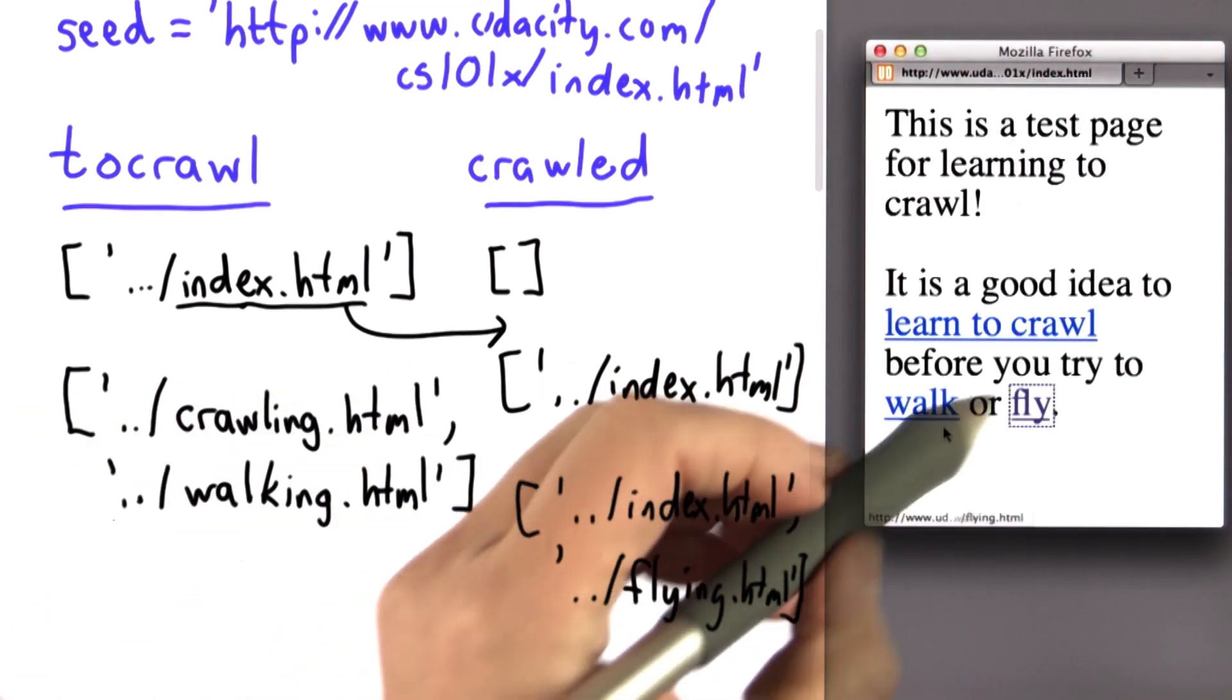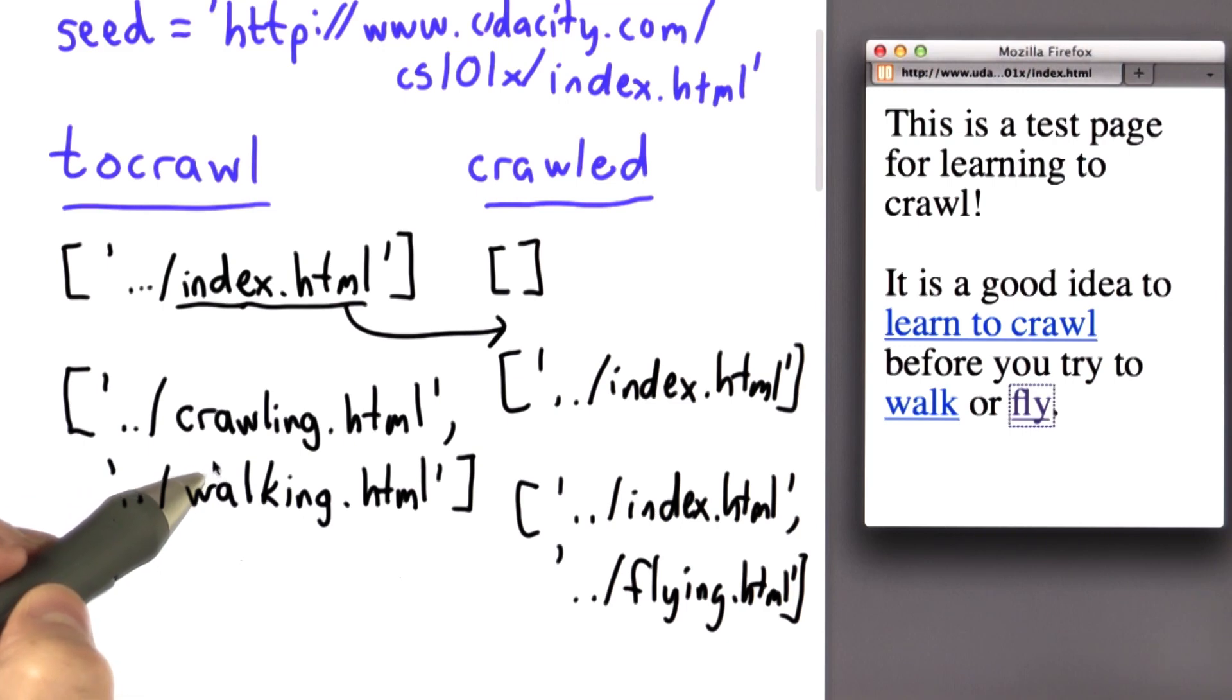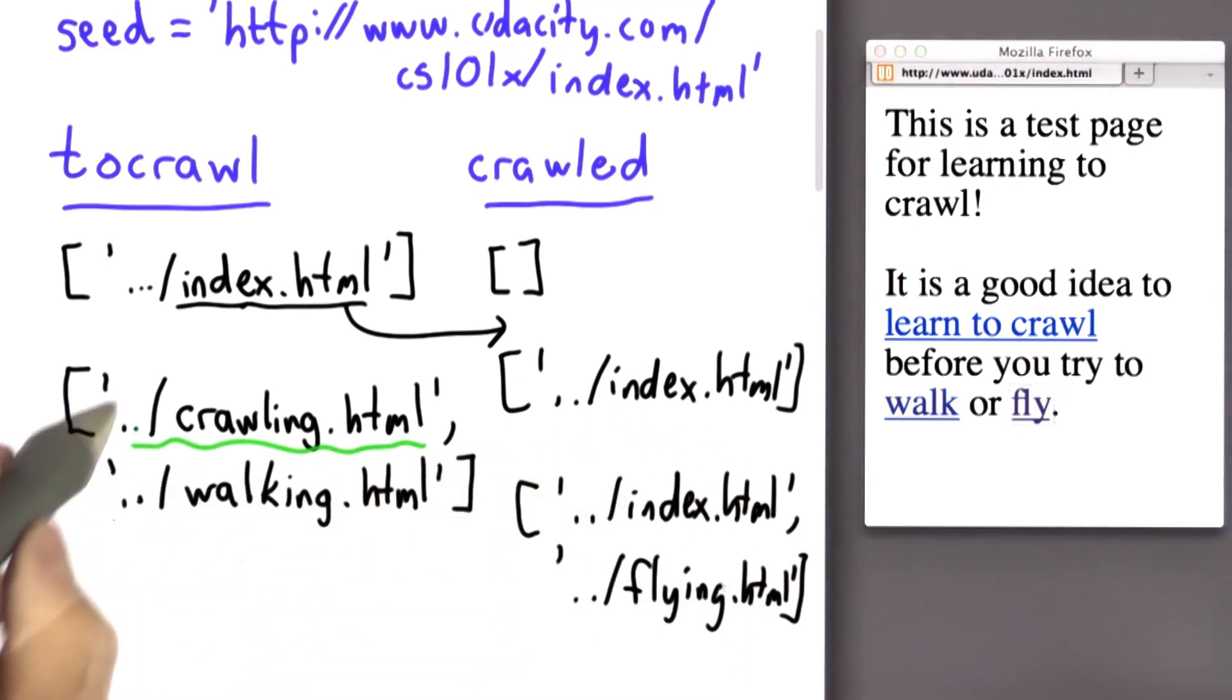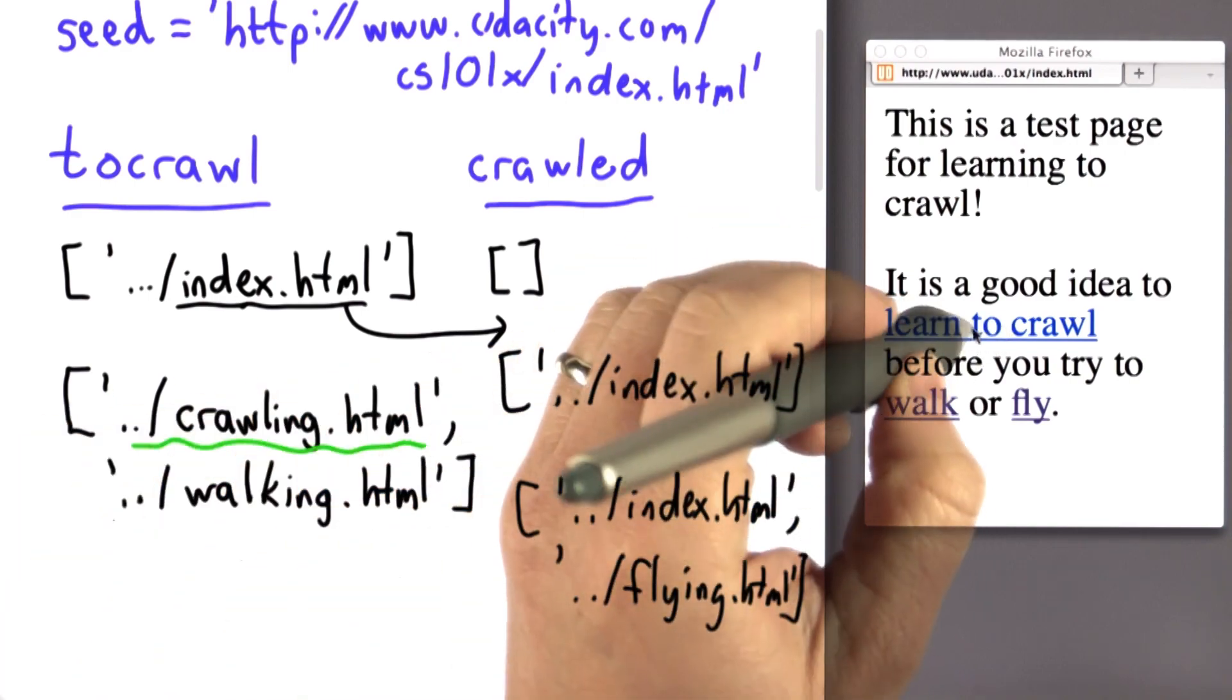Now after we've crawled flying, we have two more links left in our to crawl list. We have two links that we've crawled. So let's try another link. Let's suppose we follow the crawling.html link, and we follow crawling. We get to this page.